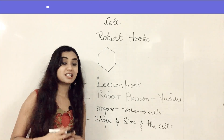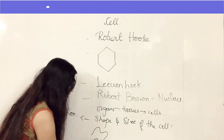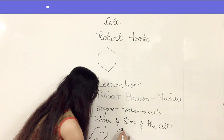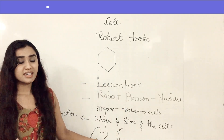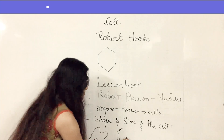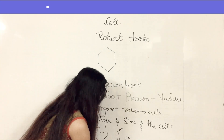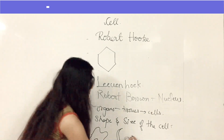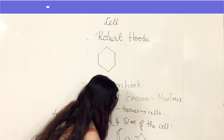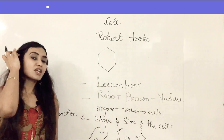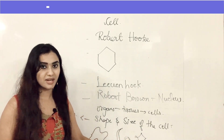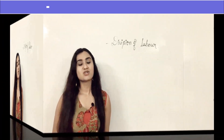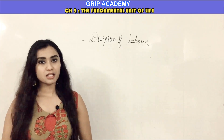For example, amoeba has an irregular shape. A smooth muscle cell has an elongated appearance. RBCs are very small oval-shaped cells. A neuron or nerve cell appears like a tree with branching extensions. So different cells have different shapes depending on the function they perform.